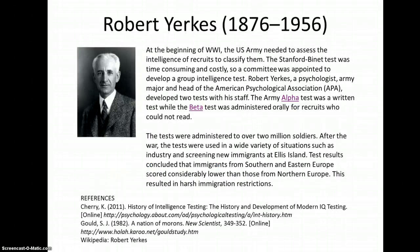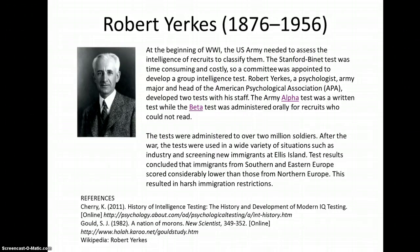Robert Yerkes was a major in the Army, a psychologist, and also the head of the American Psychological Association, now known as the APA — yes, as in APA format. He was tasked by the Army to develop a test that could be given to new recruits to determine their intelligence and their fitness for being placed as officers, enlisted men, or other. Since the Simon Binet test was so expensive and took so much time to give individually, this group test was an answer they were looking for. Yerkes and his staff developed two tests: the Army Alpha test, a written test for recruits that could read, while the Beta test was given orally. If a recruit could not pass or even attempt the Beta test, then an individual interview was given. These tests were administered to over 2 million soldiers.